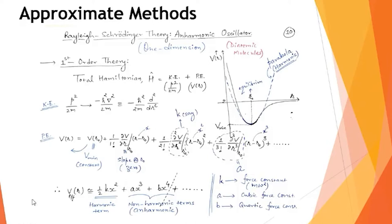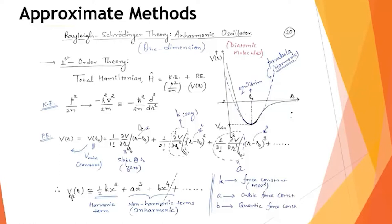If the cubic coefficient a and quartic coefficient b are both zero, we are left with only ½kx², which gives a perfect parabola—the dashed blue line in the graph. Substituting kinetic energy plus ½kx² as potential into the Hamiltonian gives exactly the simple harmonic oscillator problem. So ½kx² is the harmonic part of the potential.